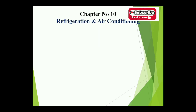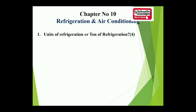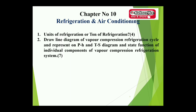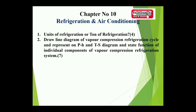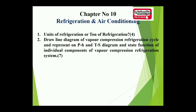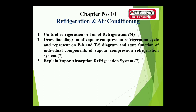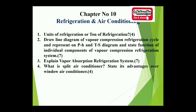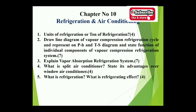Chapter ten covers refrigeration and air conditioning. Topics: units of refrigeration or ton of refrigeration — terminology used in refrigeration and air conditioning, 4 marks. Draw a line diagram of the vapor compression refrigeration (VCR) cycle and represent on P-H and T-S diagrams; state functions of individual components, 7 marks. Explain the vapor absorption refrigeration (VAR) system, 7 marks. What is a split air conditioner? State its advantages over a window air conditioner — sometimes individual theories for each. What is refrigeration? What is refrigerating effect? 4 marks.